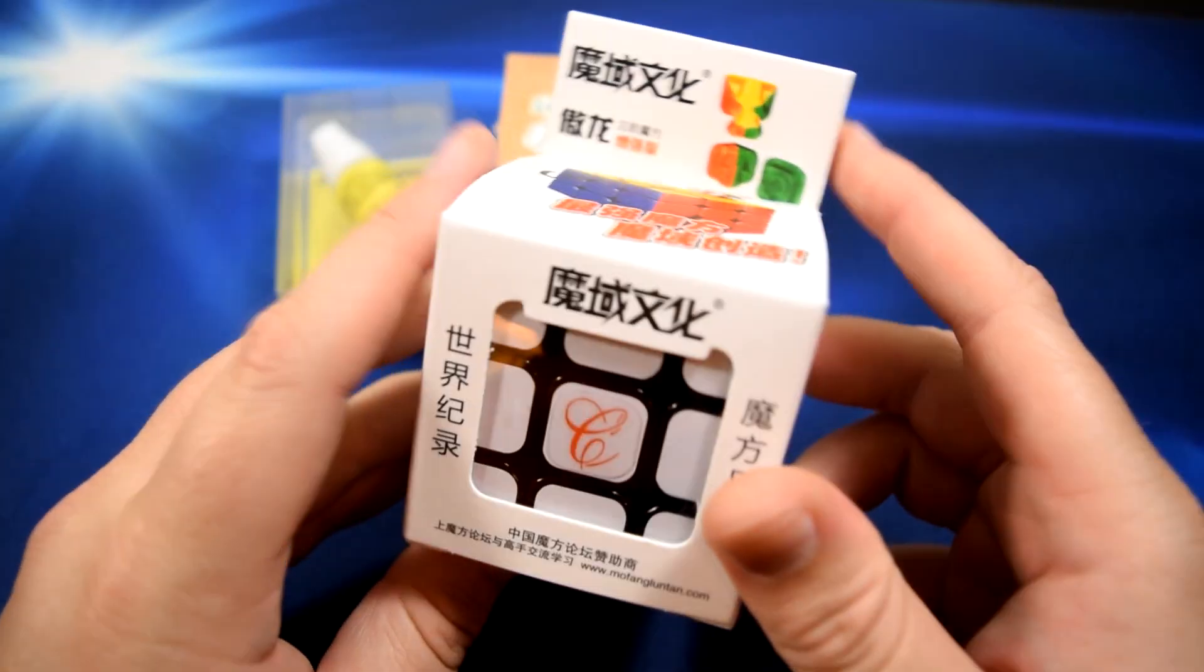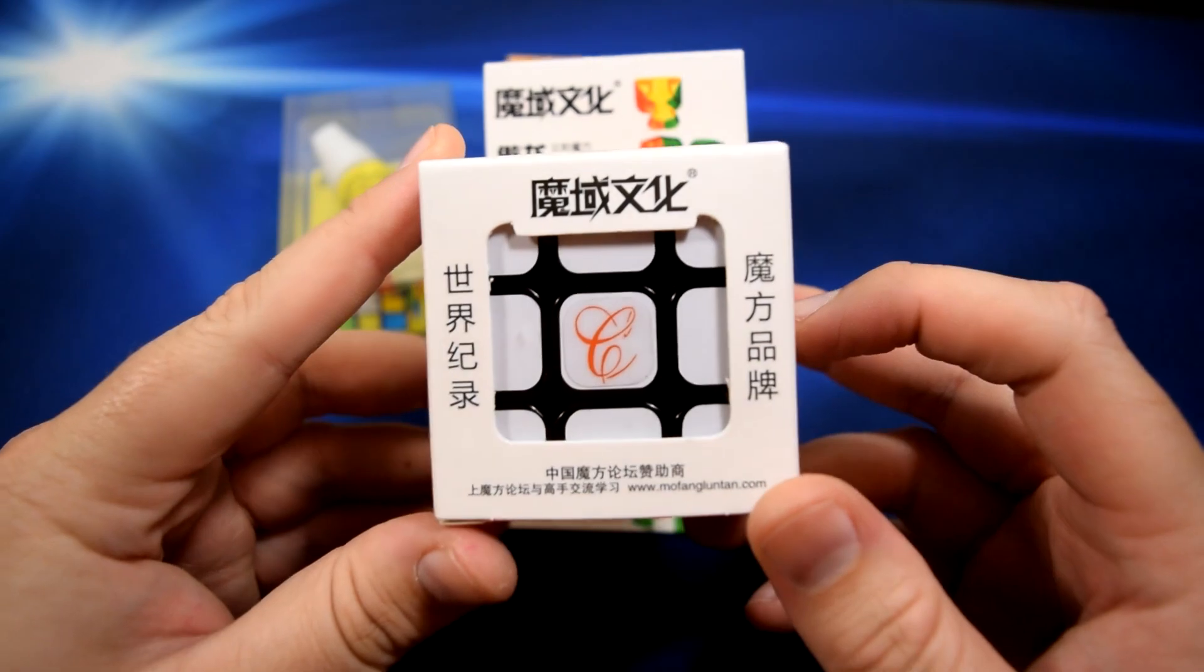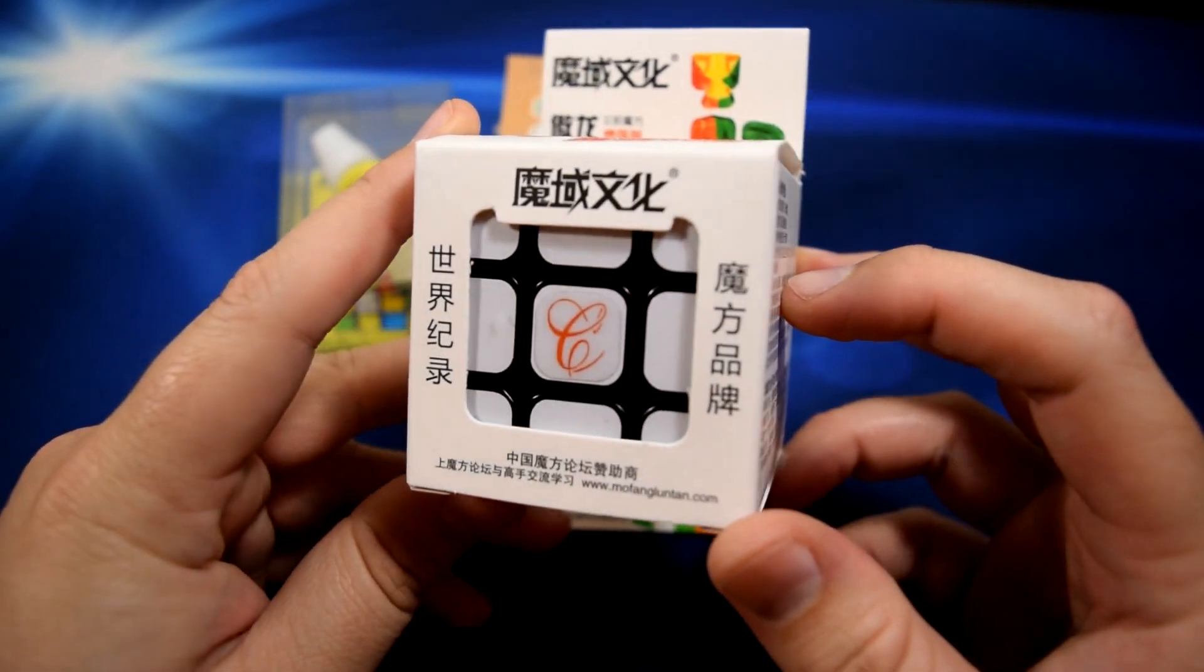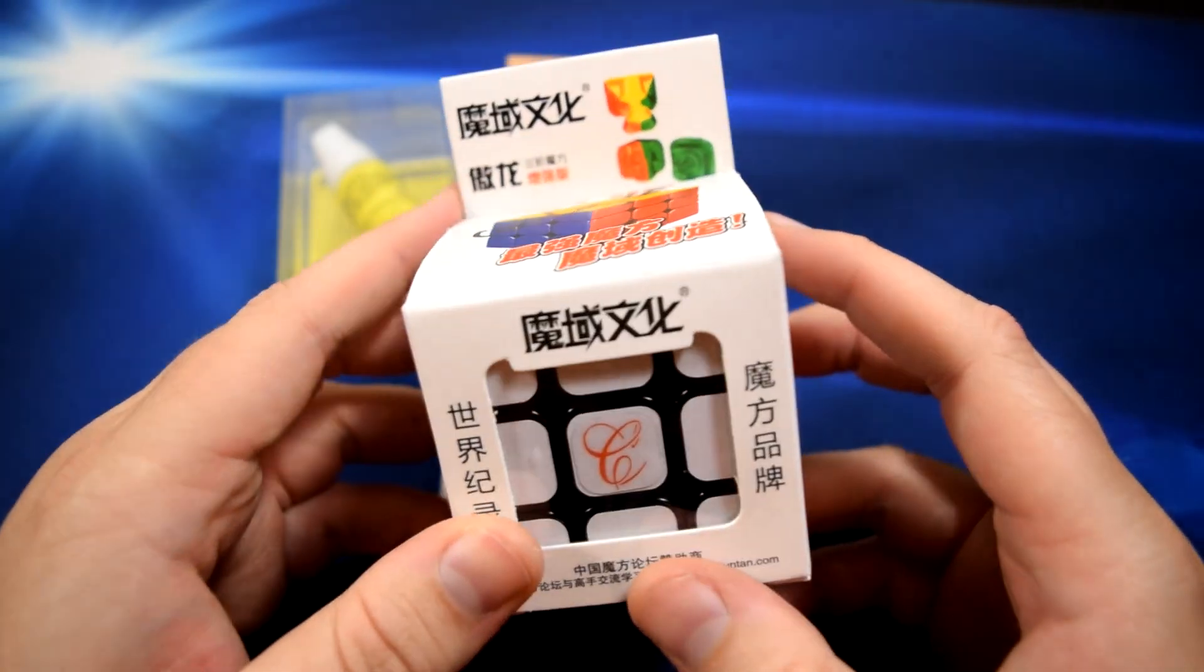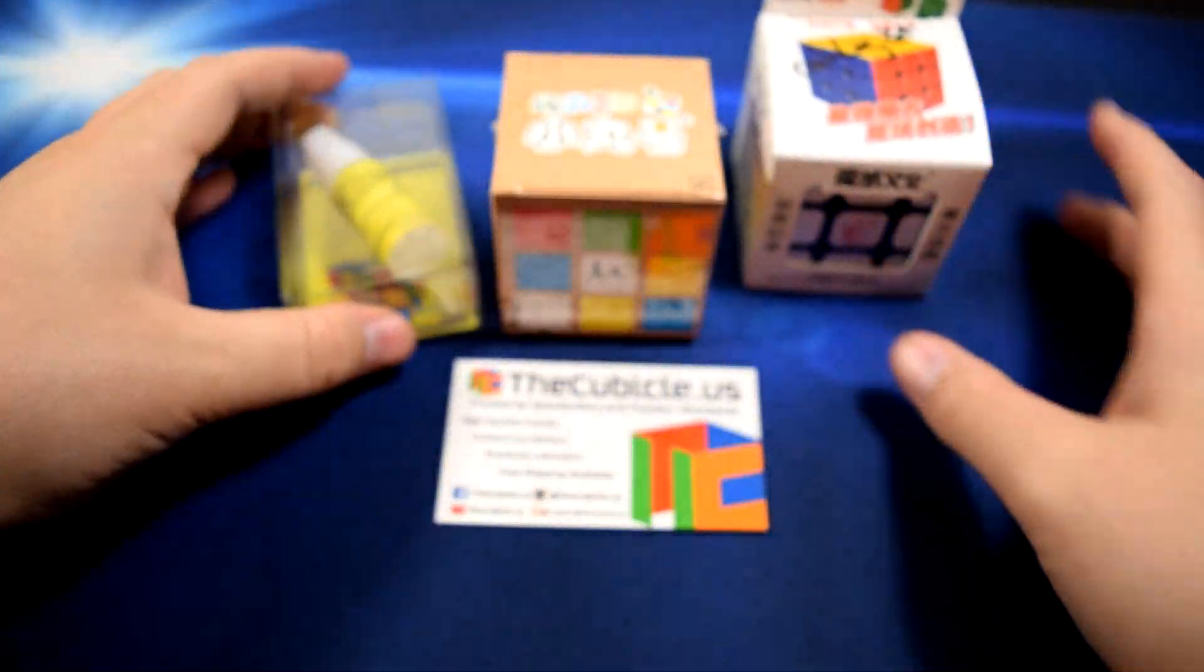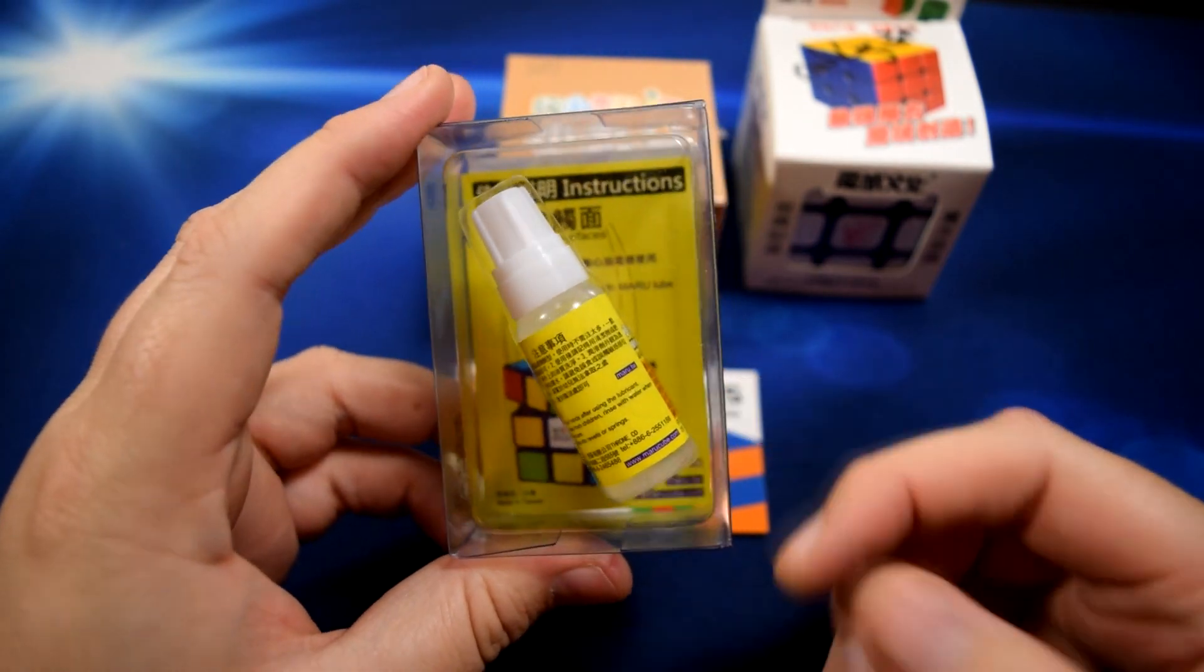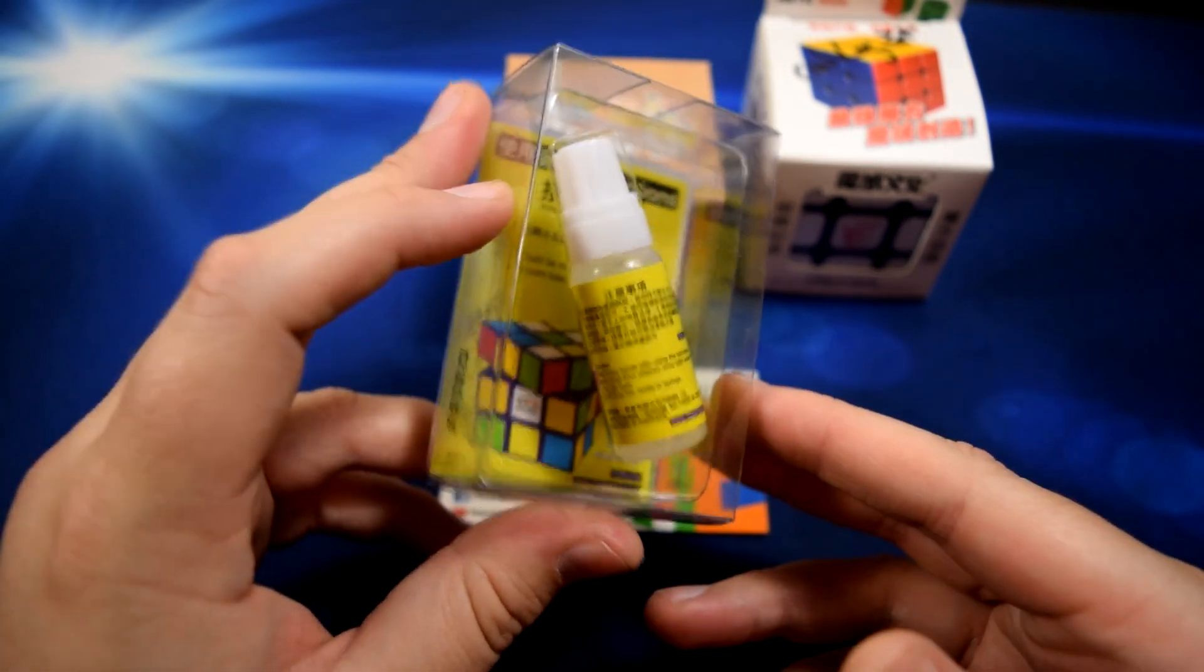This is the most exciting for me - this is the Cubicle Premium AoLong version 2. I really like that C, looks pretty cool. Oh, they wrote Cubologist on there, well that's pretty cool. Yeah, that's pretty exciting. I'm not going to be unboxing this, I will be talking about it in a review, but you see what that is - that's just some lube.